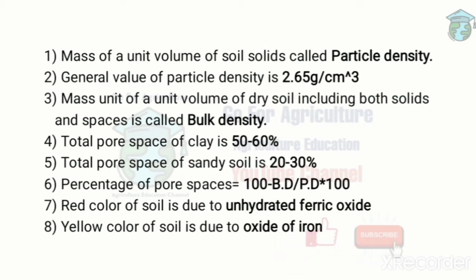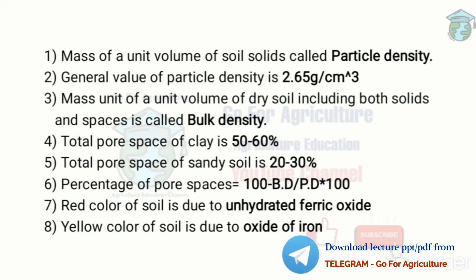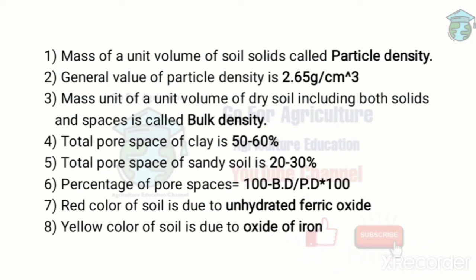Mass of a unit volume of dry soil including both solid and spaces is called bulk density. Now, bulk density and pore space are inversely related — if soil has high pore space then bulk density is lower, and if bulk density is high then pore space would be low.